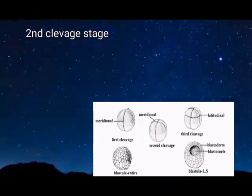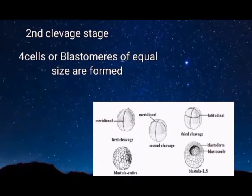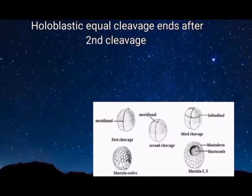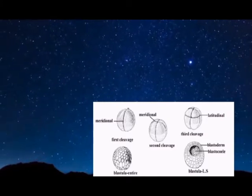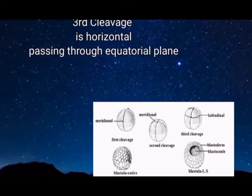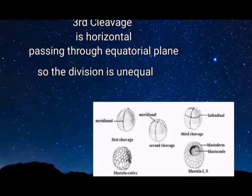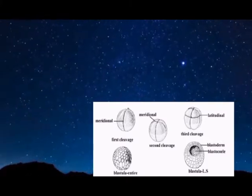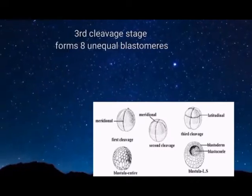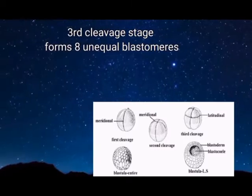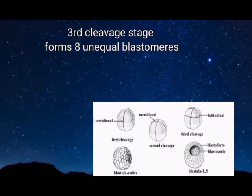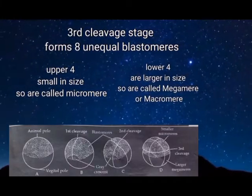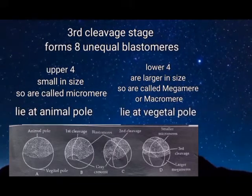Holoblastic equal cleavage in frog ends after the second cleavage division — all divisions from the third cleavage onward are unequal holoblastic. The third cleavage is horizontal, passing just above the equatorial plane, so division is unequal. The third cleavage stage forms eight unequal blastomeres: the upper four are smaller and called micromeres, and the lower four are larger and called megameres or macromeres. Micromeres lie at the animal pole and megameres at the vegetal pole.